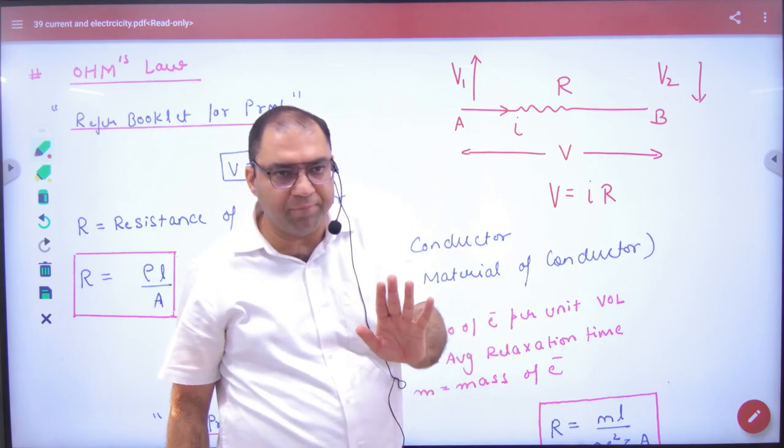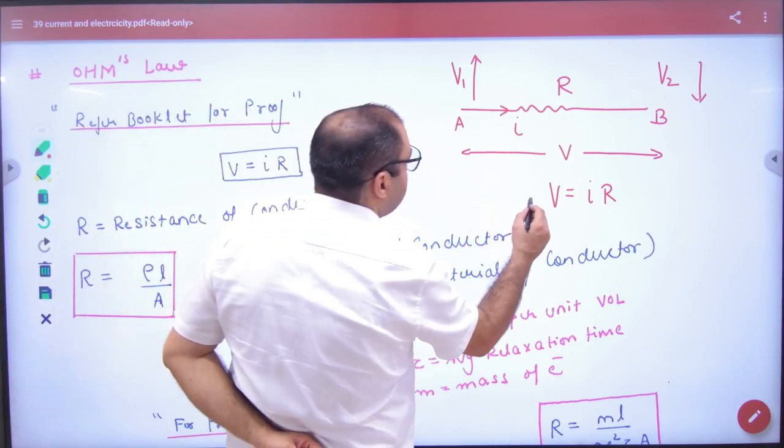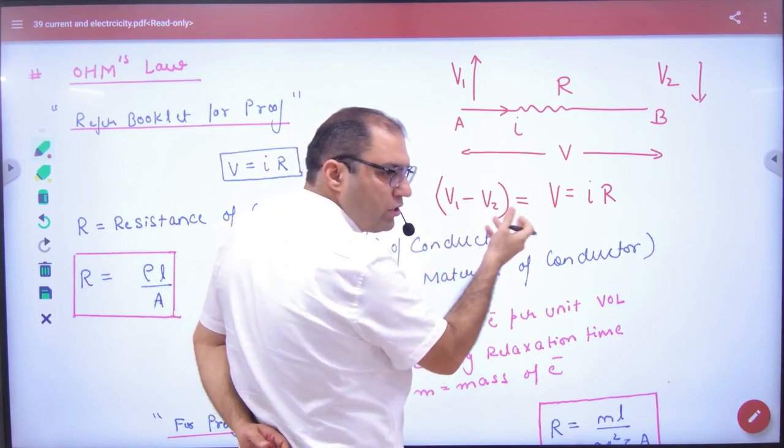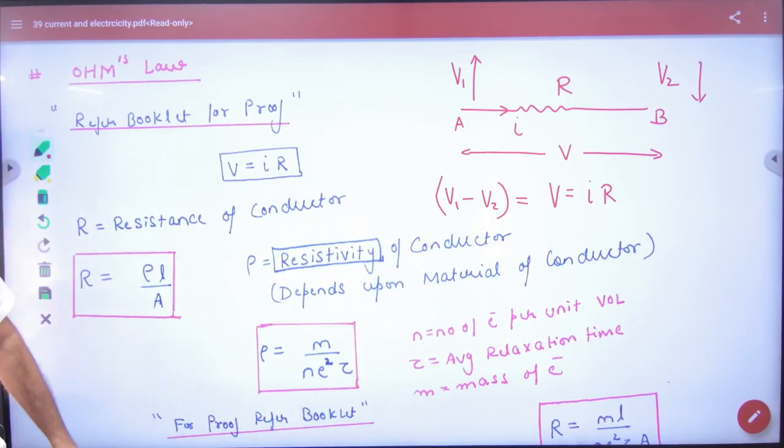Number one. Number two, V means V1 minus V2. What is the potential difference? V1 minus V2. Is the point clear here? Okay.